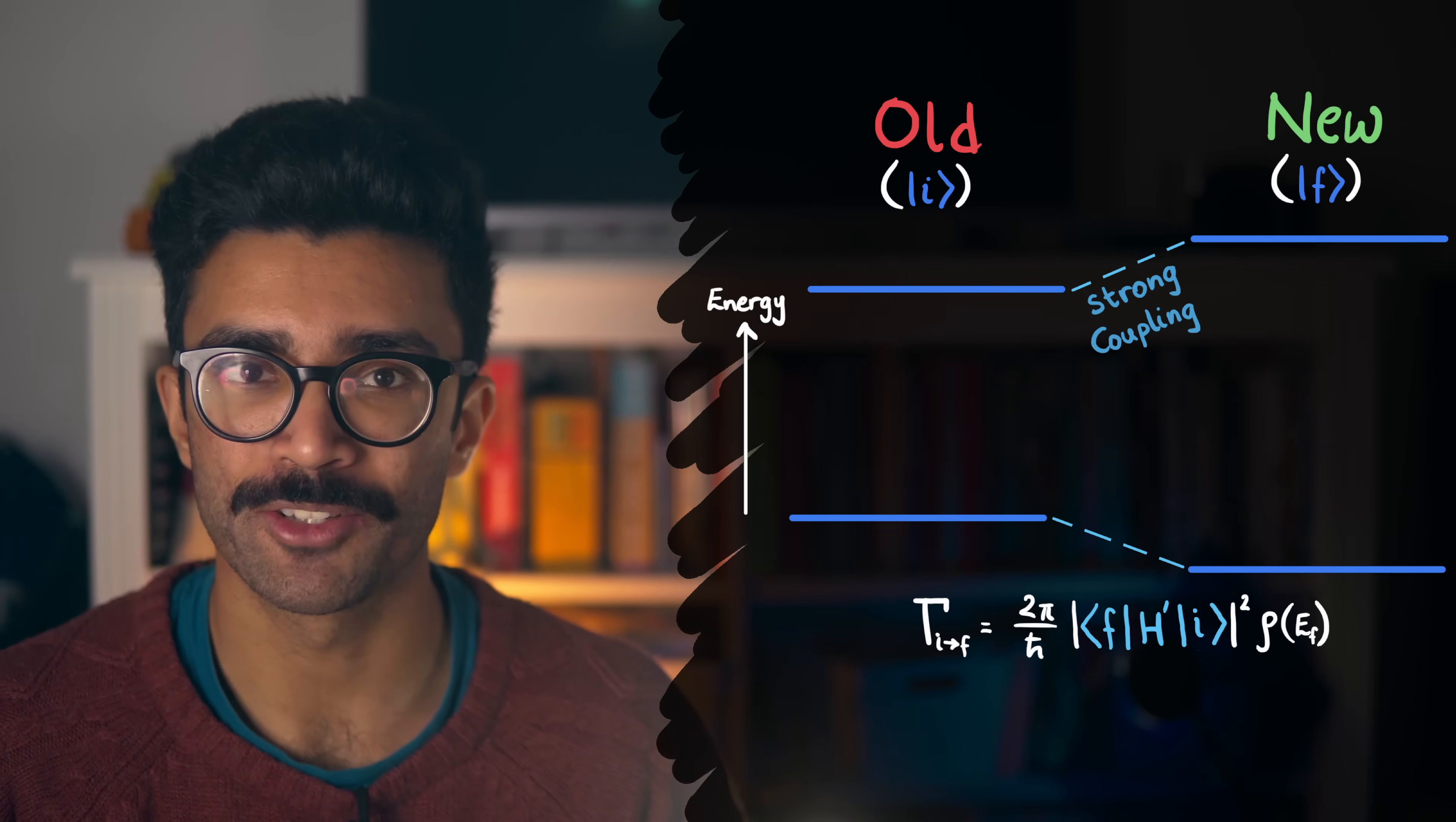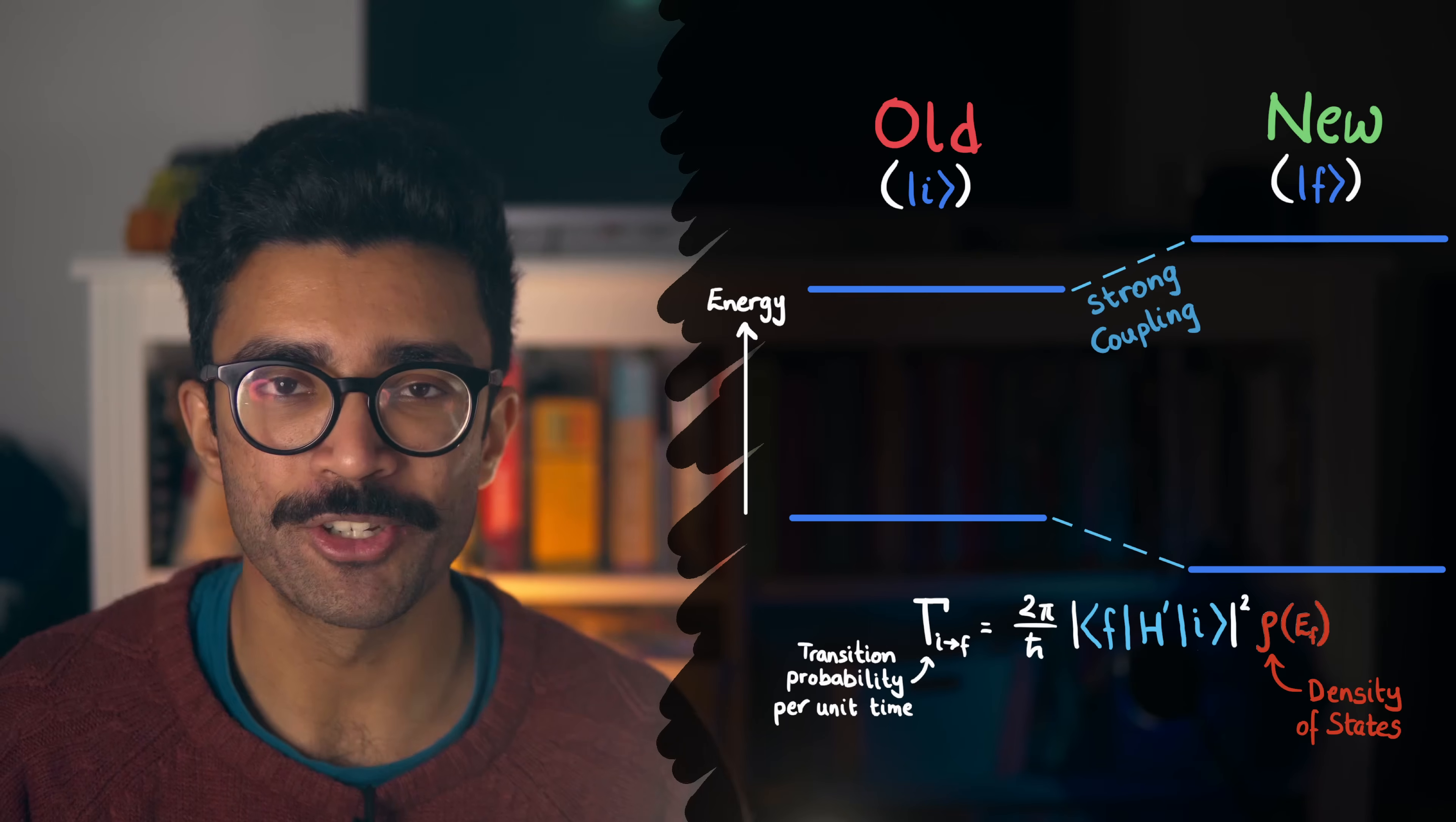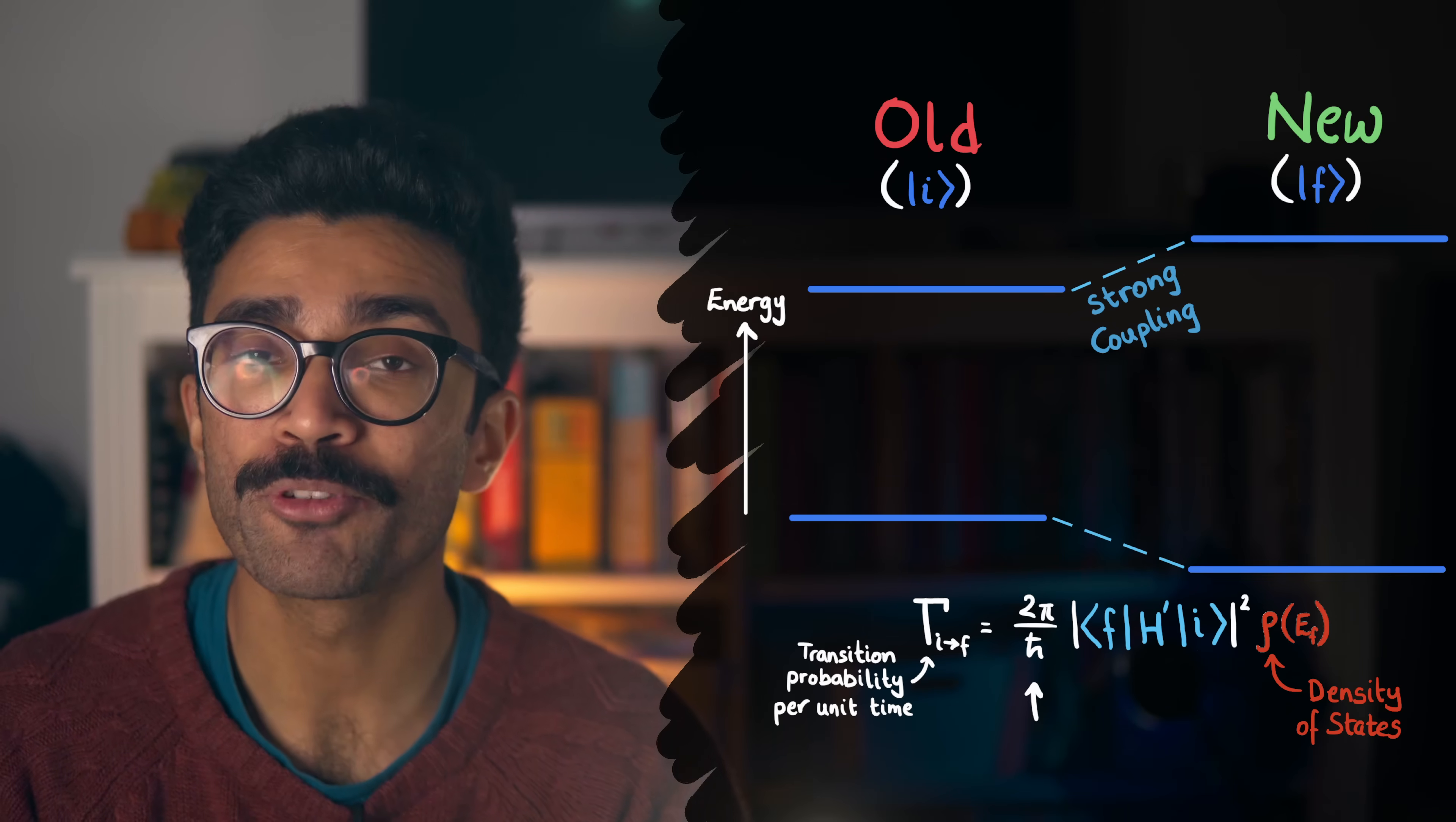Fermi's golden rule also accounts for what is known as the density of states in the new system. This density just measures how many states there are nearby to the target or final state that we're trying to calculate the transition probability for. We'll understand this in a more intuitive way in a second, but it's also worth mentioning this constant here, 2π over ℏ. It's just a constant value, basically used to scale the transition probability so that we do in fact calculate a probability between 0 and 1. Not super important for us here, but it's good to know that it exists in the formula.